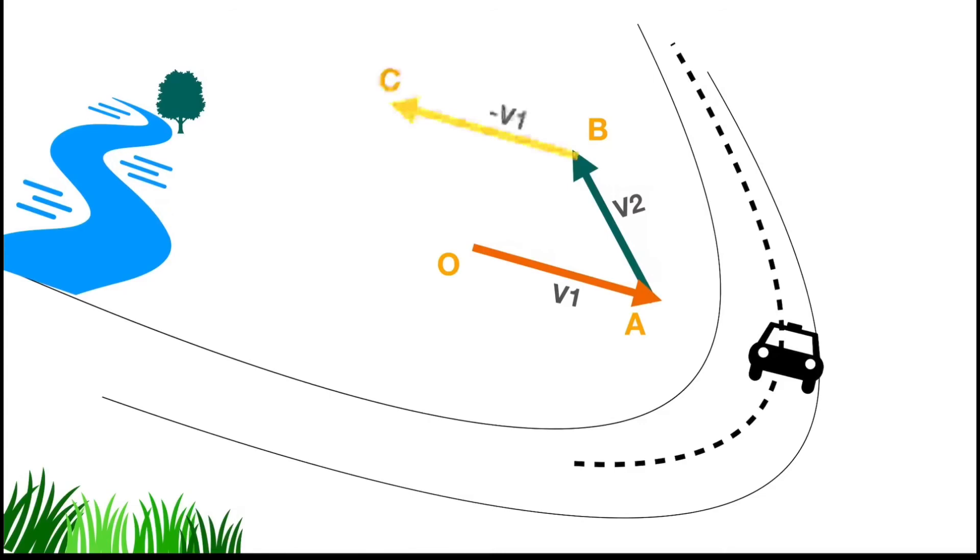So to find out the resultant vector, we have to connect A to C. So AC is your vector which shows the acceleration of the car because of the direction change. And it's represented by A equal to V2 minus V1. And it's working towards direction AC.